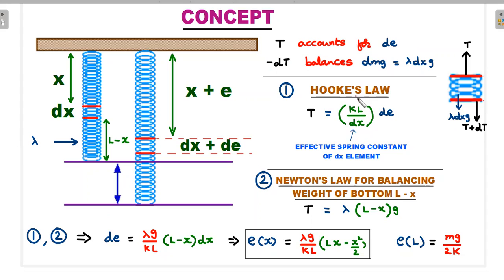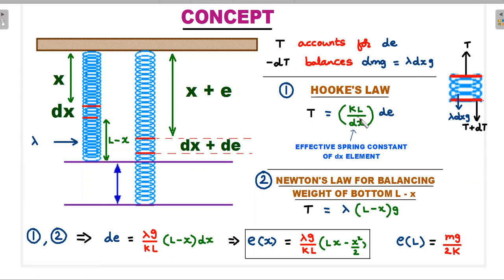We apply two simple laws. First, Hooke's law: force T applied on both sides equals the spring constant of this small element multiplied by extension d. Writing the effective spring constant of the element in terms of the whole spring constant: it's k·l/dx. This has been discussed in an older video. Second is the force balance. Rather than integrating dT, let's go back to the original diagram to avoid integration.